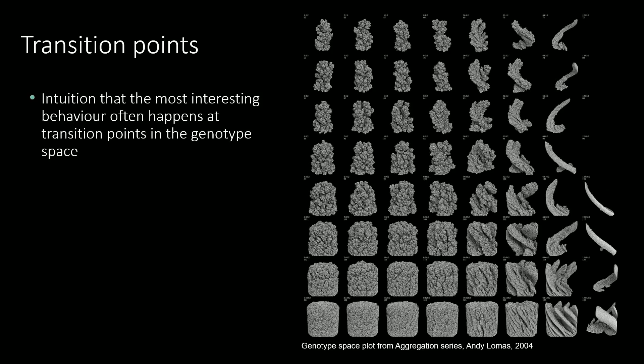One intuition is that places in the genotype space where there is a transition from one type of behaviour to another can be particularly aesthetically interesting. You can see this in a plot from the aggregation series, one of my earlier works, showing the effects of varying two genotype parameters. The most interesting forms are towards the right-hand side, where we get a tipping point from quite predictable uniform behaviour into instability on the far right. This method of dense sampling works for the aggregation series with only two or three parameters, but doesn't work well with higher numbers of dimensions, such as the 12 parameters in the genotype for the cellular forms.